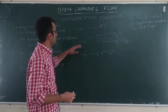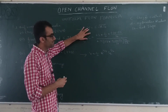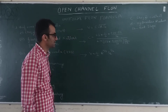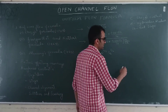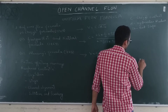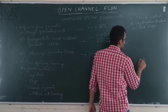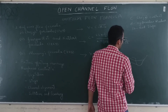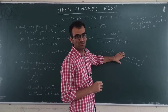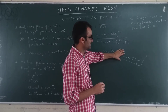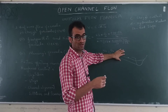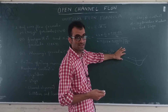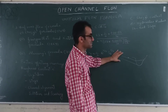Now, what is the use of this formula? How can we use it in the field? In practical application, suppose we want to use this formula. Think of an example: you have a river and its cross section. Suppose there is a gauging station at some particular location — that is the location where people measure the velocities and discharge of the flowing river, where we measure the depth and discharge.